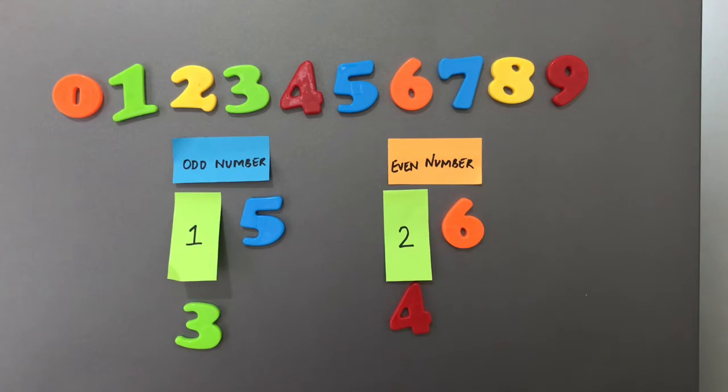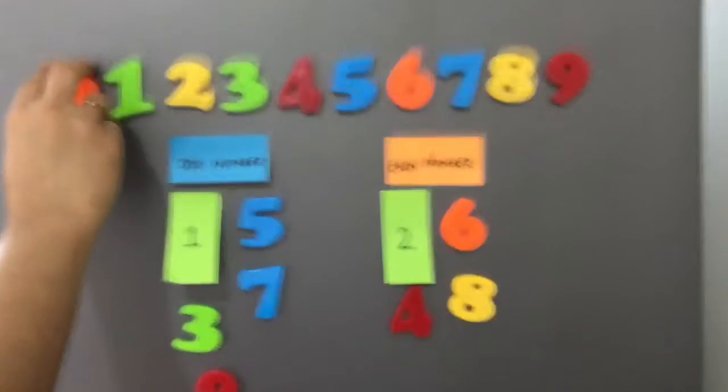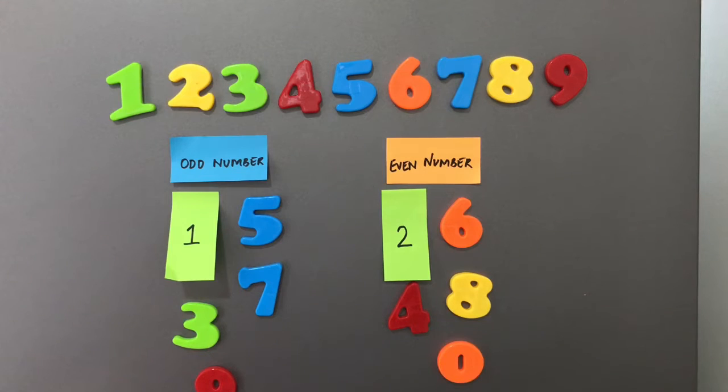And the child can complete the entire deal. So we have seven as odd, eight as even, nine as odd.